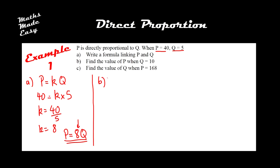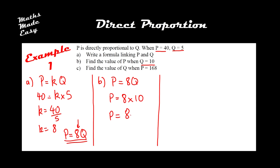Part B: find the value of P when Q equals 10. I would always write out my formula at the start — P equals 8Q — then substitute in the information given. Q is 10, so P equals 8 times 10, which is 80. It's that simple.